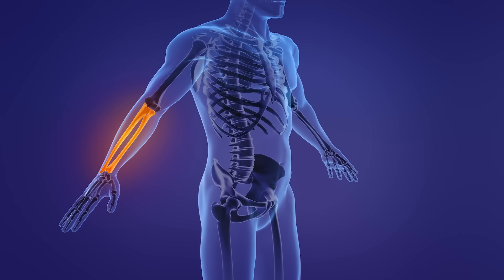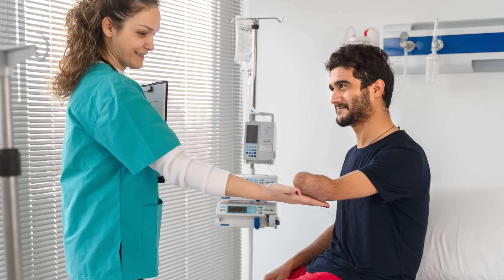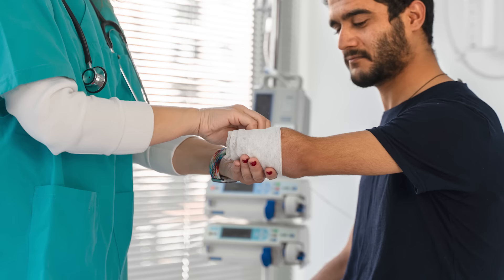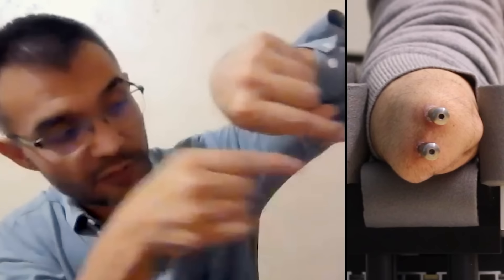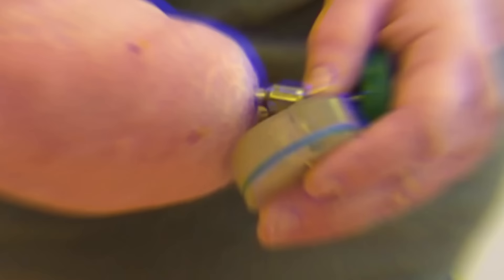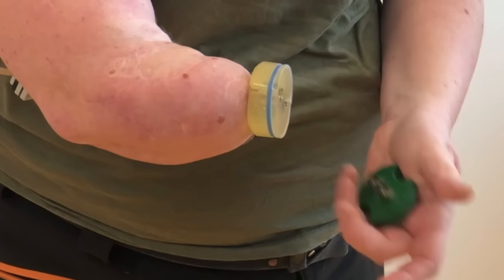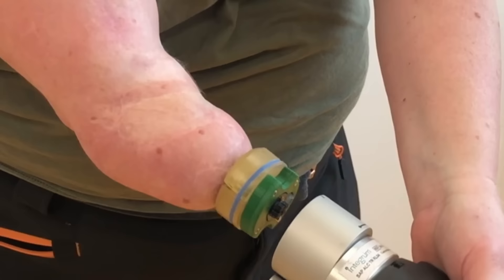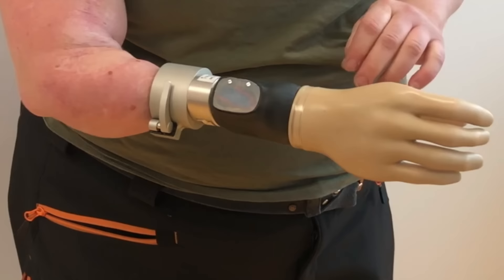Implanting into a residual limb that has been amputated below the elbow has its own challenges, because there are two smaller bones, the radius and the ulna, and they move independently from each other. So they will move like this, they will move like this, and they will also move in their own axis. So we develop an artificial joint that allows for those movements to take place, while preserving a natural orbit for the movement.